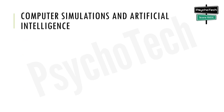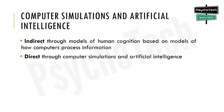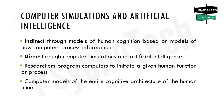The next method is computer simulations and artificial intelligence. Digital computers played a fundamental role in the emergence of cognitive psychology. One kind of influence is indirect, through models of human cognition based on how computers process information. Another kind is direct, through computer simulation and artificial intelligence, where researchers program computers to imitate a given human function or process.